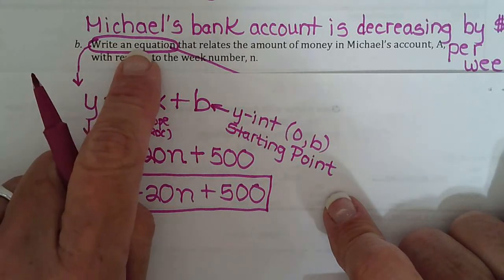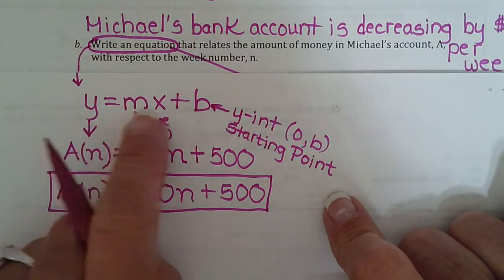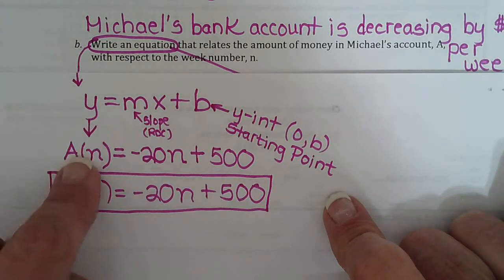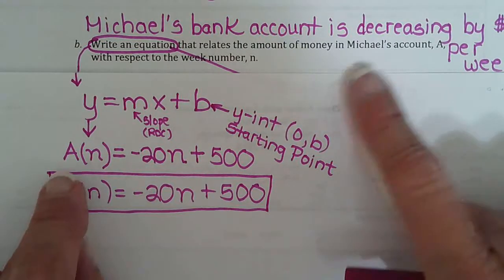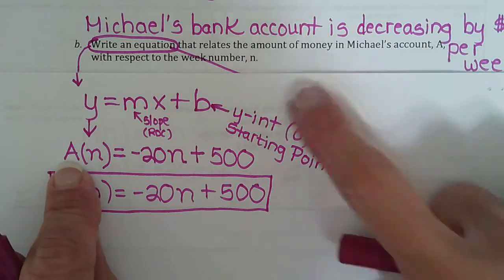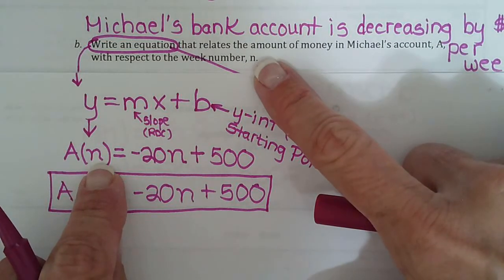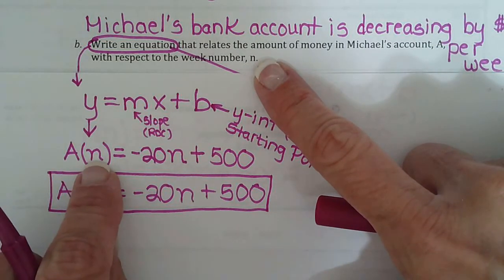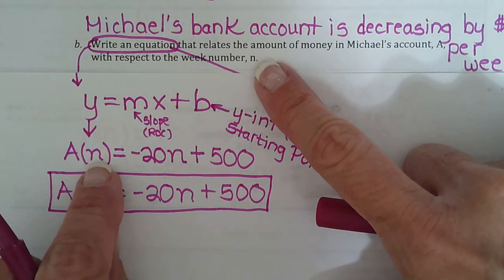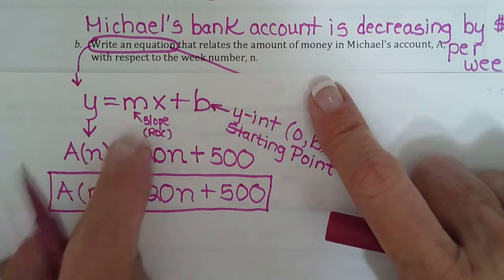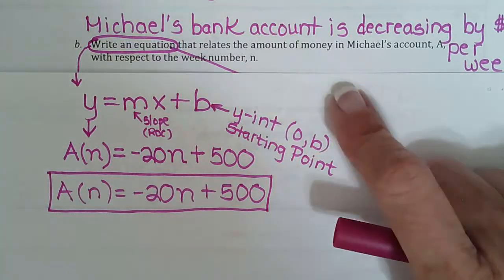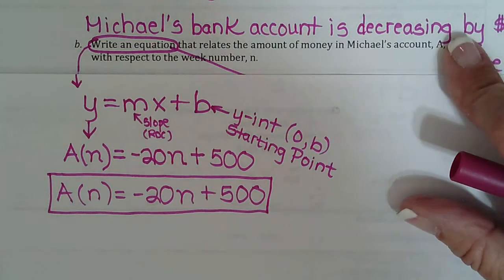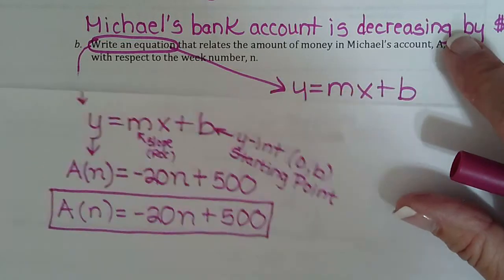The minute you read write an equation you immediately write this. And then you just start filling in from what's given all the different values. So the capital letter is always y. The lowercase letter is going to be your n. So a of n that means the problem is written with respect to n. Slope we found. We said our x was n and the starting point. There we go. So now we did a good job with that.